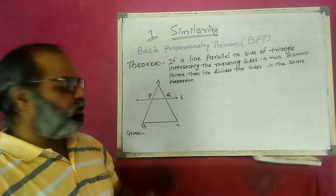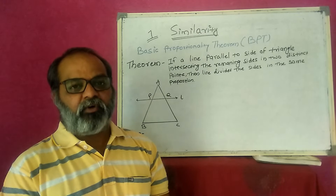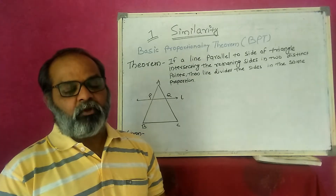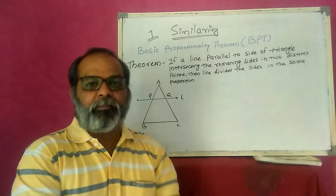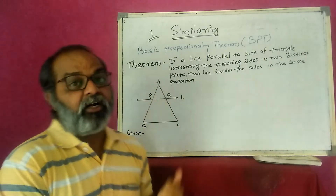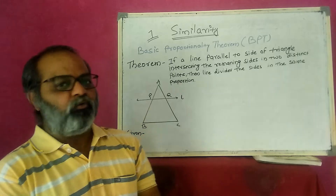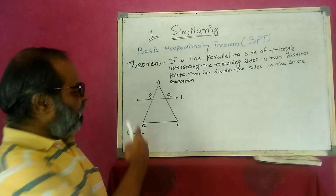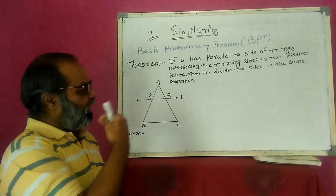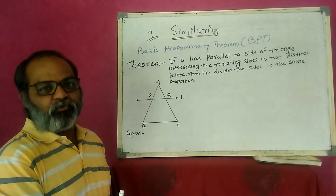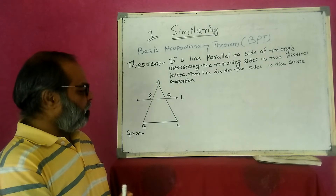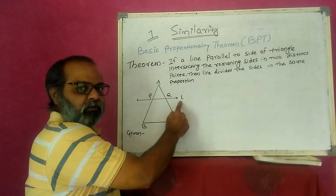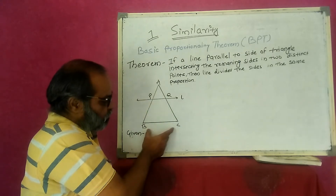I'll draw the figure and write what is given. Reading the figure is a very important part in geometry — what the figure contains is called reading the figure. So I see there is a triangle ABC and a line L which is parallel to side BC.